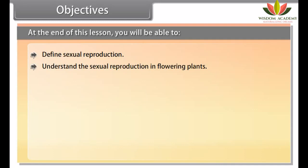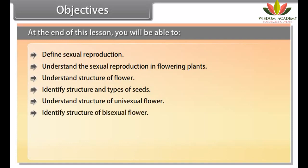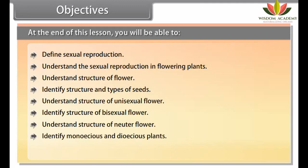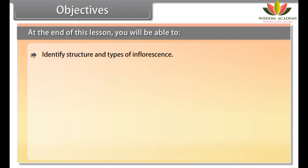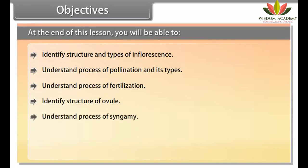At the end of this lesson, you'll be able to: define sexual reproduction; understand sexual reproduction in flowering plants; understand the structure of a flower; identify structure and types of seeds; understand structure of unisexual, bisexual, and neuter flowers; identify monoecious and dioecious plants; understand functions of a flower; identify structure and types of inflorescence; understand the process of pollination and its types; understand the process of fertilization; identify structure of ovule; understand syngamy, triple fusion, and double fertilization.